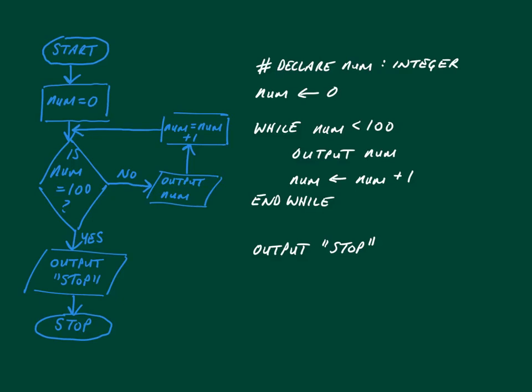When number becomes 100 we display 'Stop' to the user and then we stop the program. So although it doesn't translate directly to pseudocode, this is how you create a loop using a flowchart.